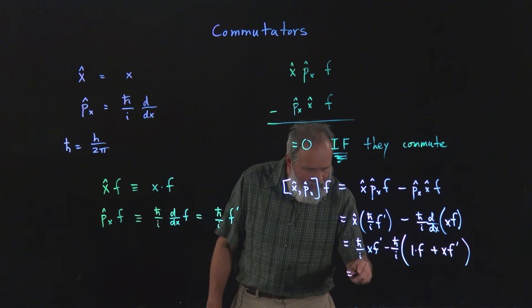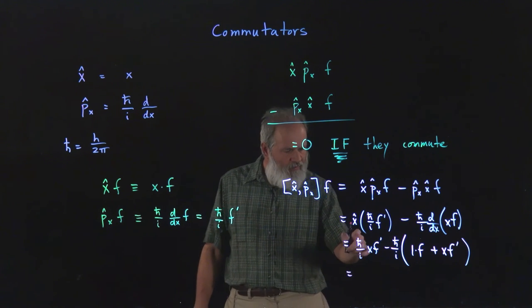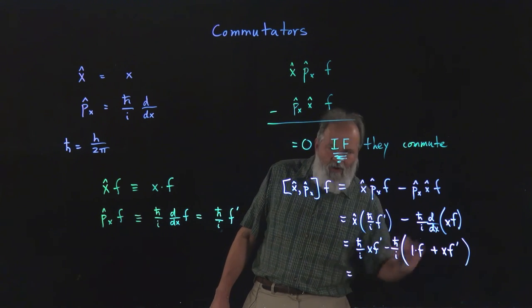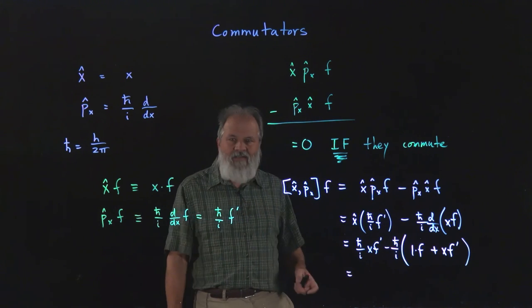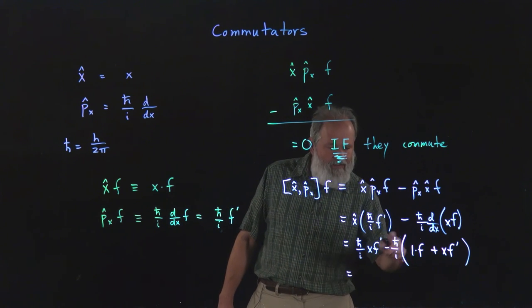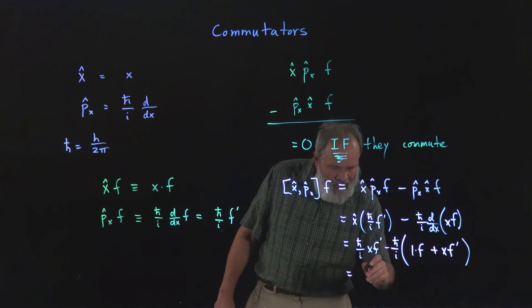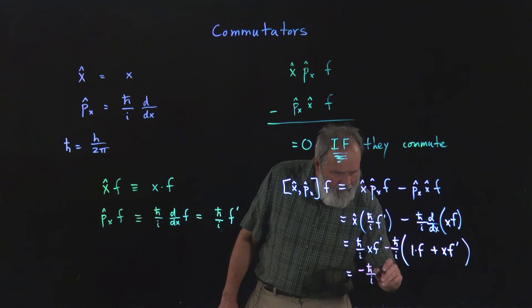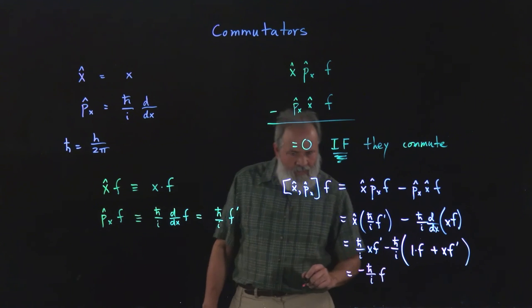So now if we analyze this we see we have h bar over i x f prime minus h bar over i x f prime. So those two terms actually subtract and give zero. However, this term here remains.